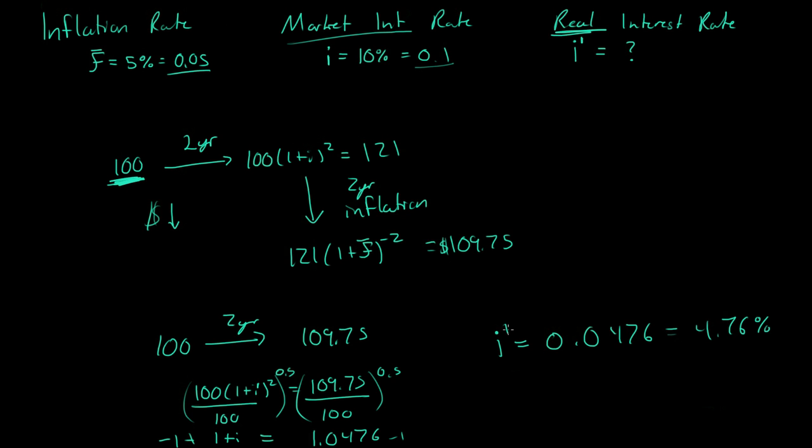So what we get is i is equal to 0.0476%, or 4.76%. So that is the, I keep forgetting to put i prime, or the real interest rate, the real amount of interest we gained over those two years was only 4.76%, not the initial 10 that we thought we were getting, because there was such a high inflation rate. So if you wanted to actually test yourself to make sure that you got the right answer, all you have to do is say, okay, so the market interest rate, i, is equal to the real interest rate plus the inflation rate plus the real interest rate times the inflation rate.